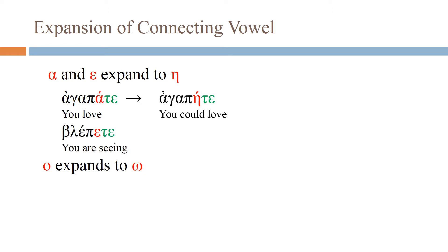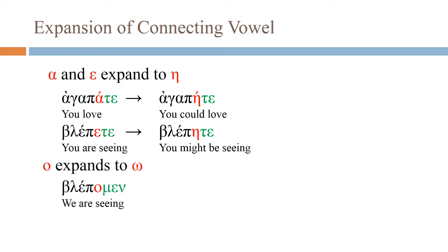So if it's an epsilon, such as blepete ('you are seeing'), it expands to blepēte ('you might be seeing'). And the omicron expands to omega. So for blepomen ('we are seeing'), the omicron expands and we get blepōmen — 'we may be seeing.'